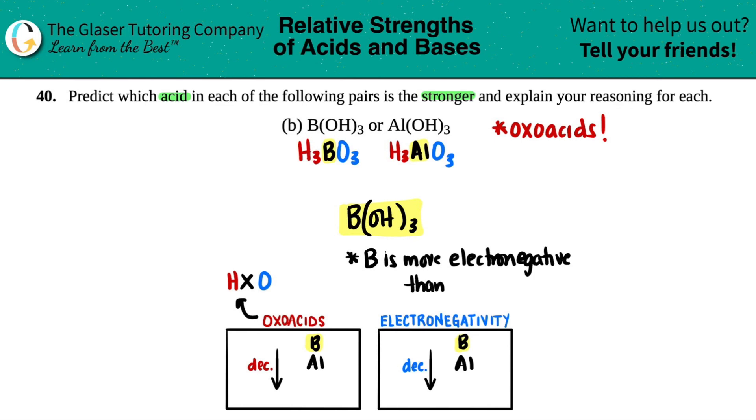So the explanation is because boron is more electronegative than aluminum. And because of that, it's easier to donate a hydrogen. If you're more electronegative, it's easier for you to donate a hydrogen because you'll become a negative charge. And that's it.